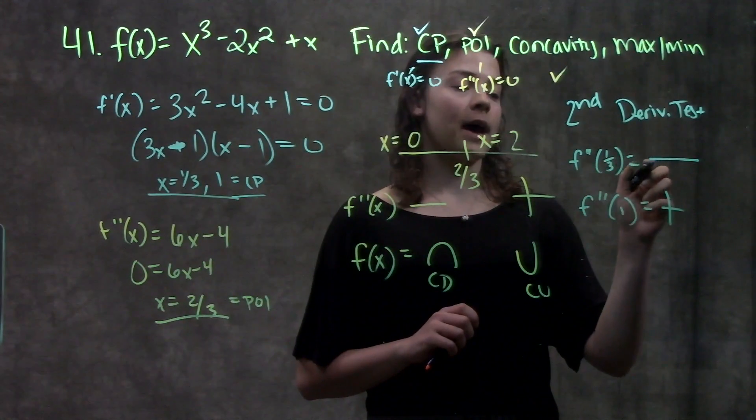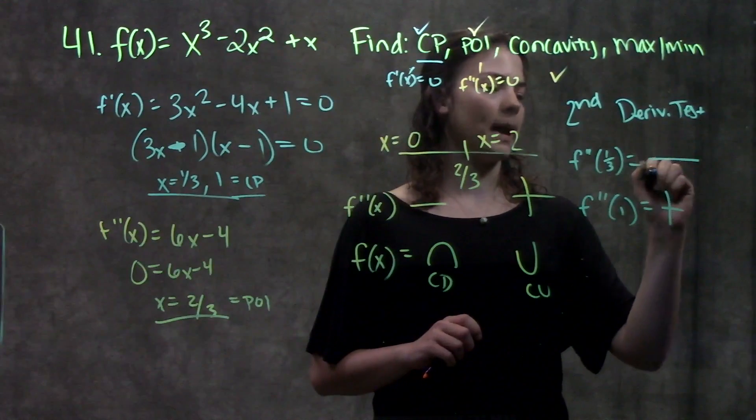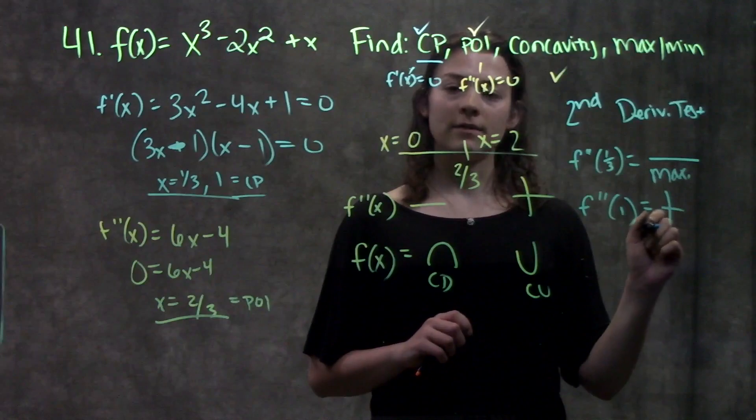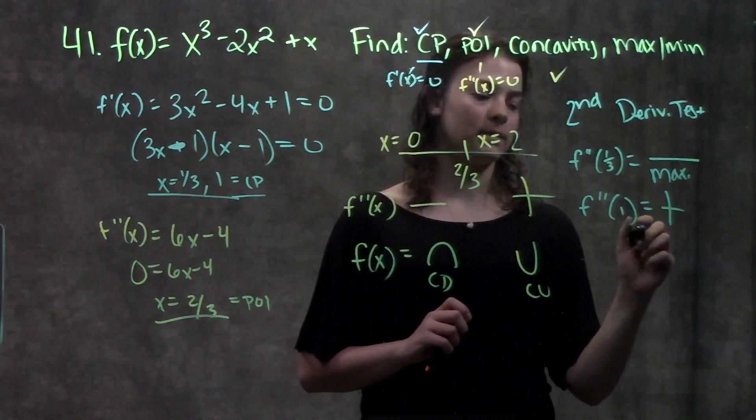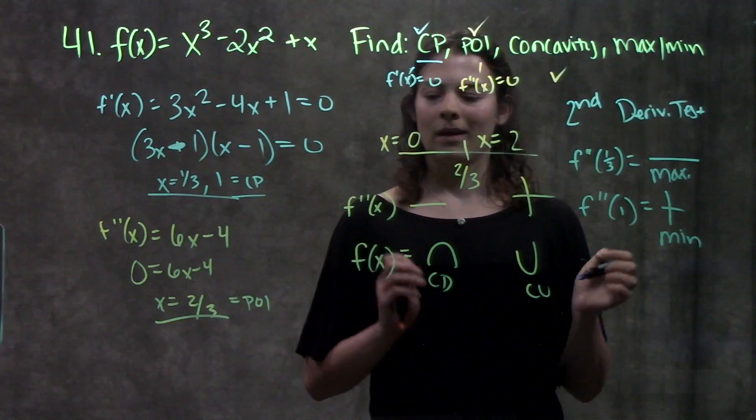And remember, if I have a negative for my second derivative test, that means that this is a maximum. And if I have a positive value when I plug in my critical point into my second derivative, that means that this is a minimum.